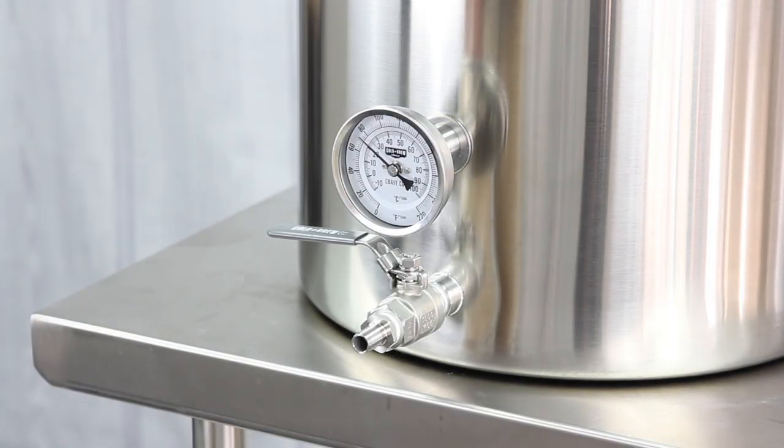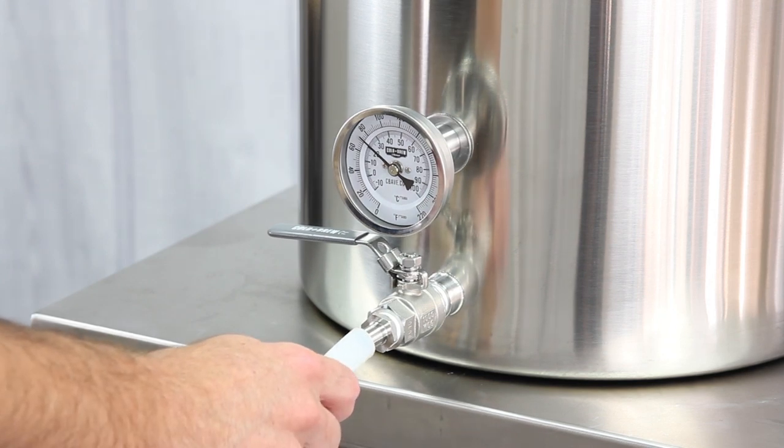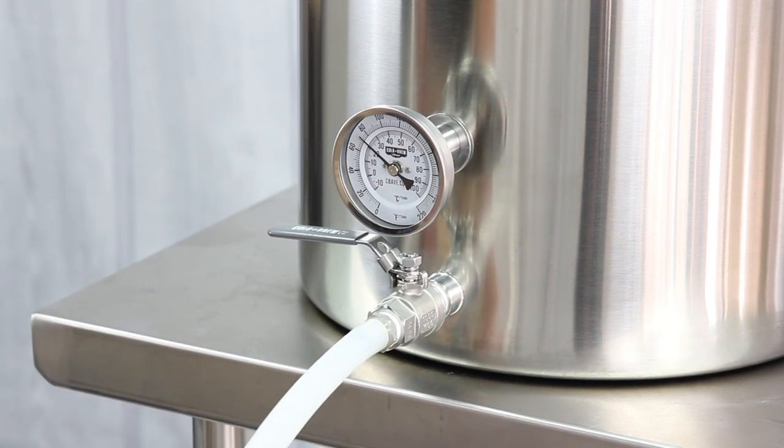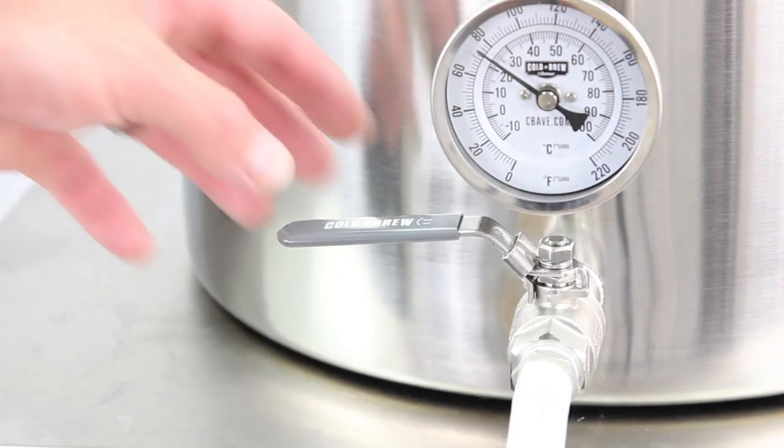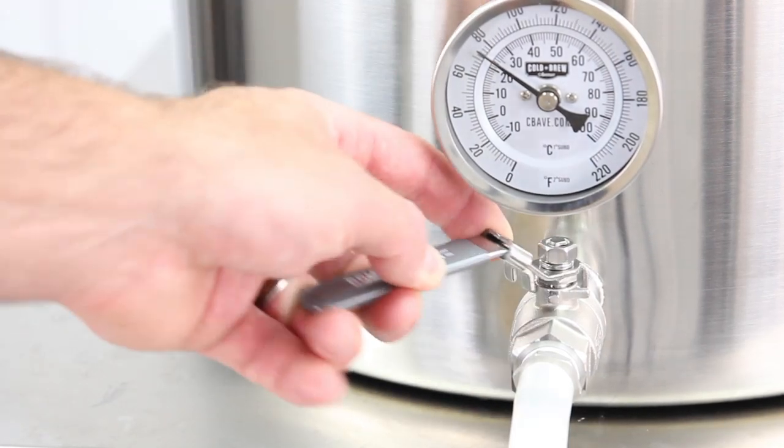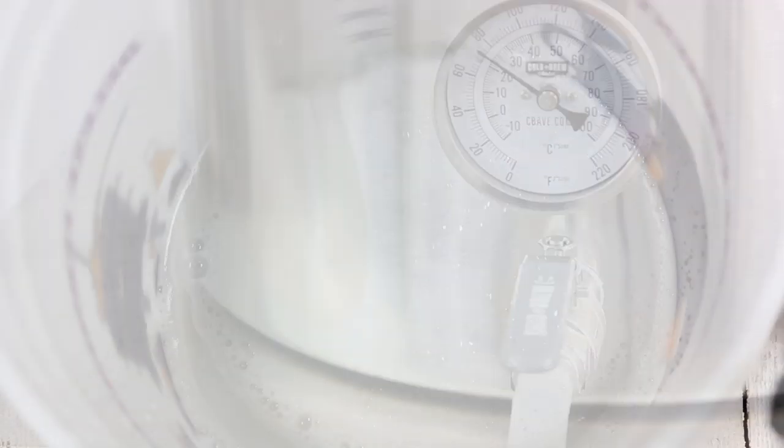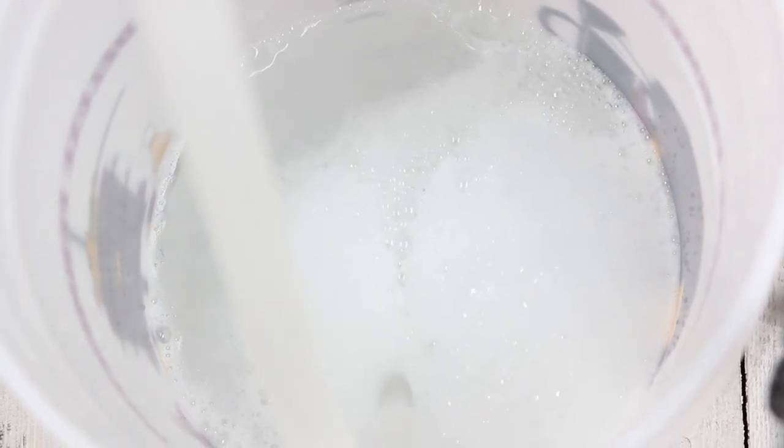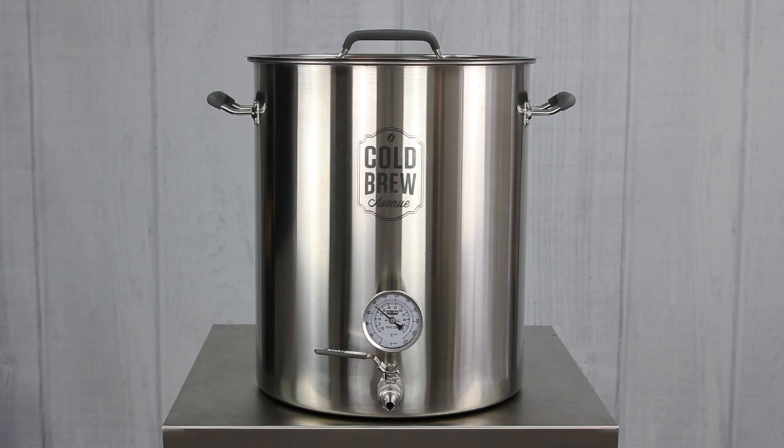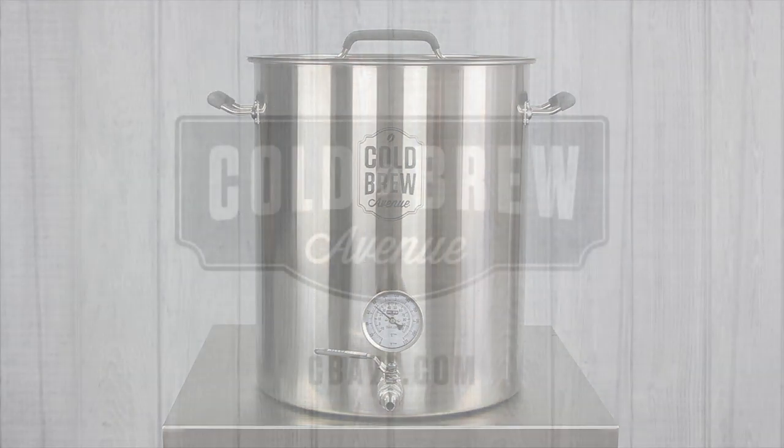After soaking in sanitizer for the recommended amount of time, attach the transfer hose to the hose barb and open the ball valve to begin draining the sanitizer from the cold brew system. Your cold brew system is now sanitized and ready to use.